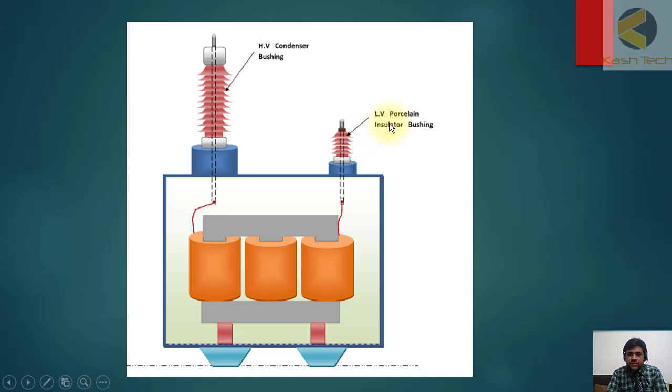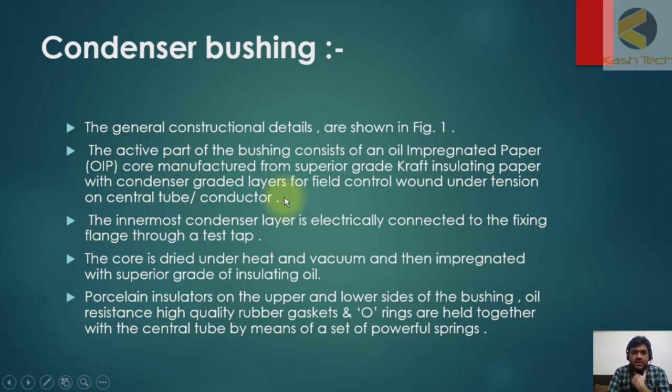The low voltage is of porcelain; the high voltage is condenser bushing. We will discuss condenser bushing. General constructional details are shown in figure one. The active part of bushing consists of an oil-impregnated paper core manufactured from superior grade kraft insulating paper with condenser graded layers for field control.